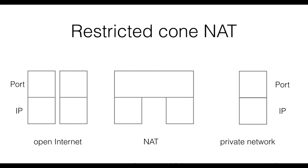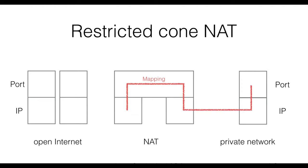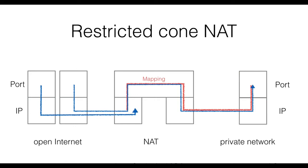A restricted cone NAT, or address restricted cone NAT, works in a very similar way, but this mechanism places additional requirements on which external IPs can contact the private network. Once a connection from the private network is allowed, a mapping for those public and private IP-port pairs is created. Traffic from an open Internet host that previously received traffic from a host in the private network is always allowed. Note that in this case only the source IP address matters, while the port number is not considered. If traffic for the private network reaches the NAT from an IP that was never contacted from a host in the internal network, this traffic is dropped.